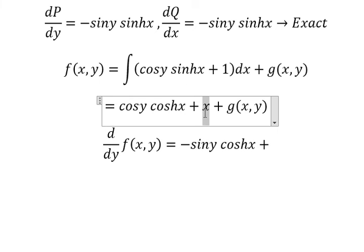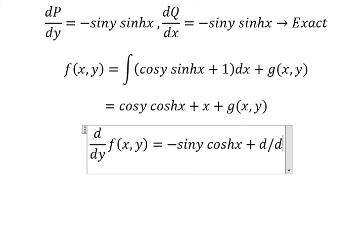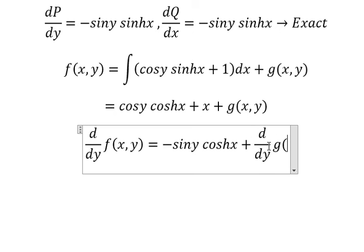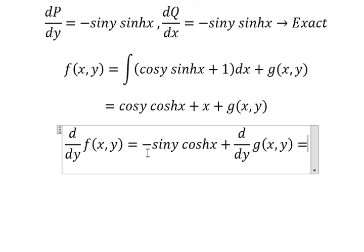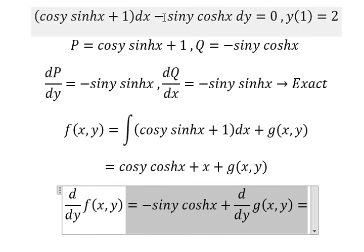This one we have number zero because we don't have y. This one we have d/dy g(x,y). And we know that this one equals to this one.